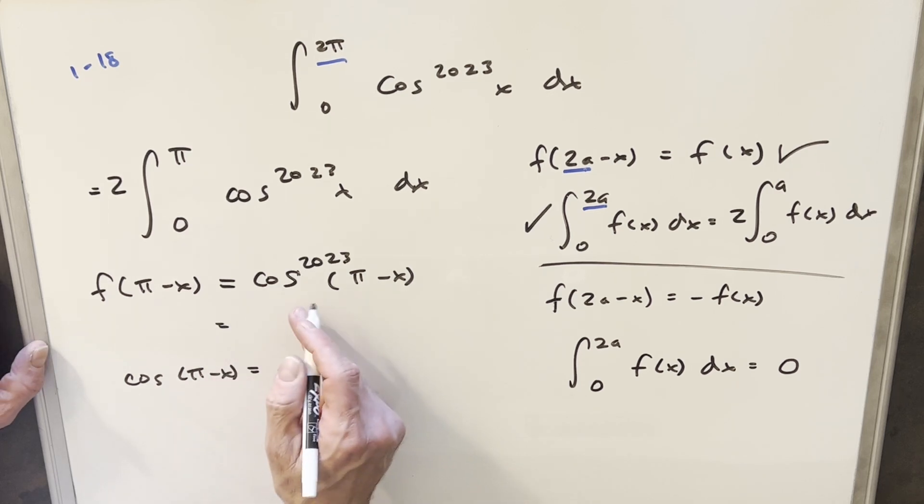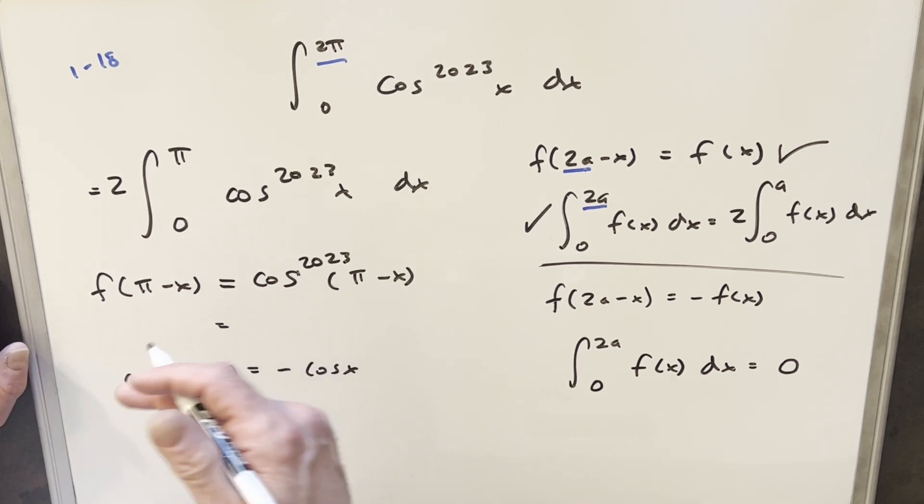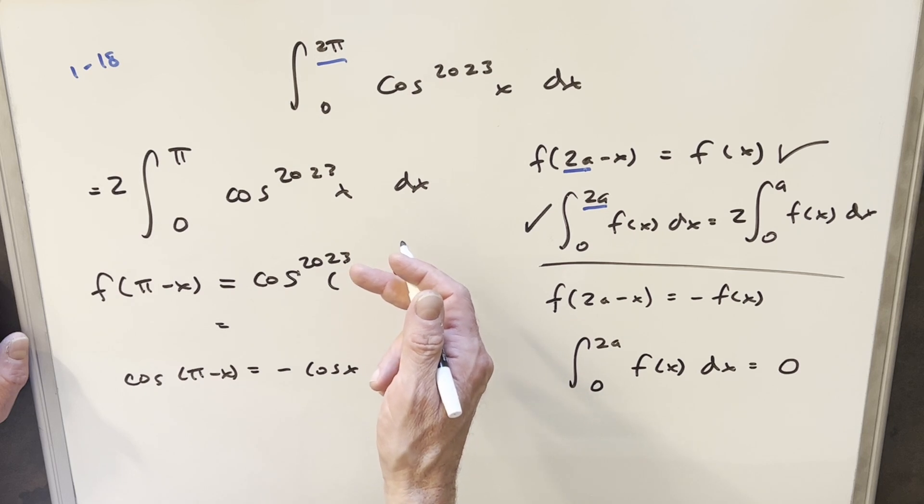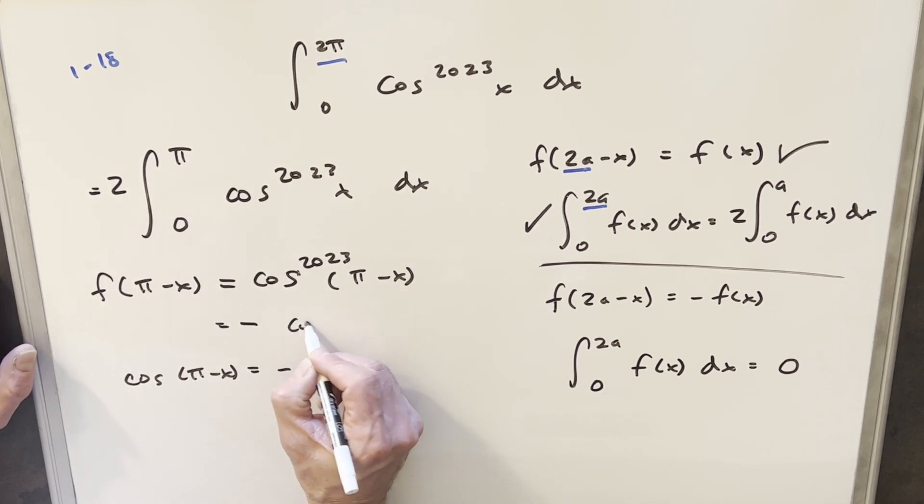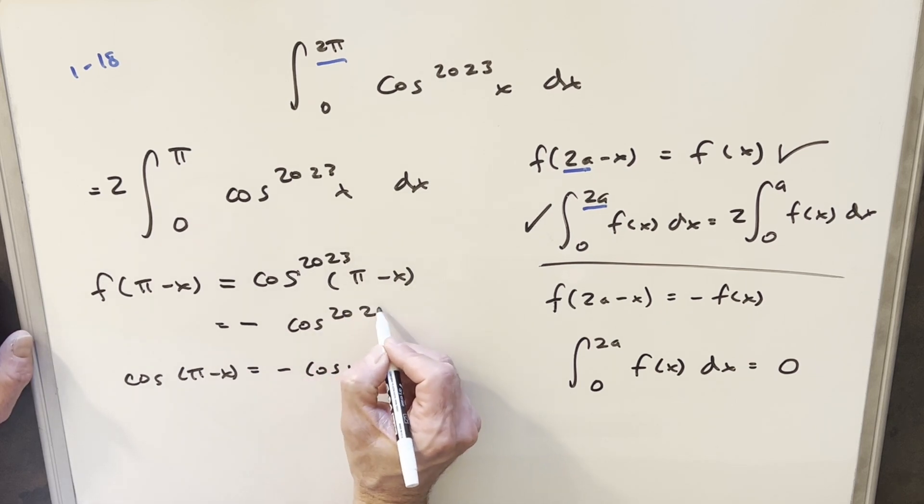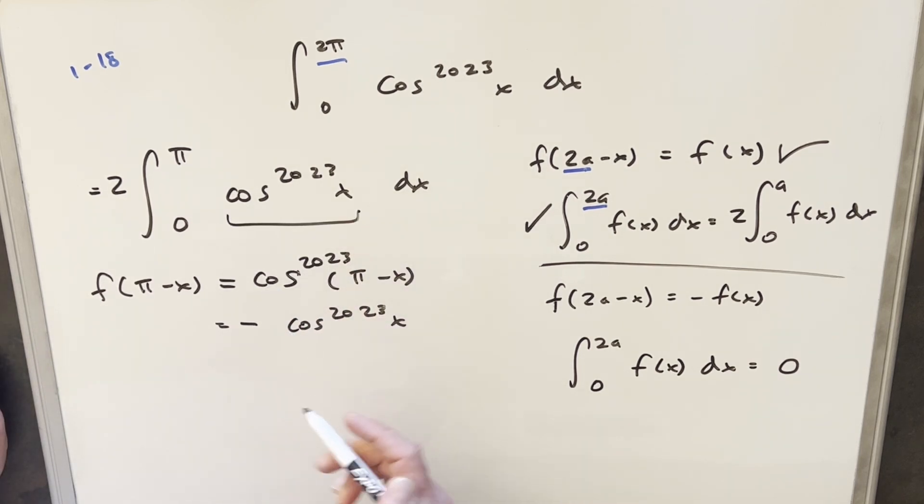So, plugging this in here, if we plug in minus cosine x here, raised to the 2023, because it's an odd power, we're going to have a minus out front, and this is going to become cosine 2023 x. But cosine 2023 x is just our f of x, so this is the same thing as minus f of x, and so this condition here is also true.